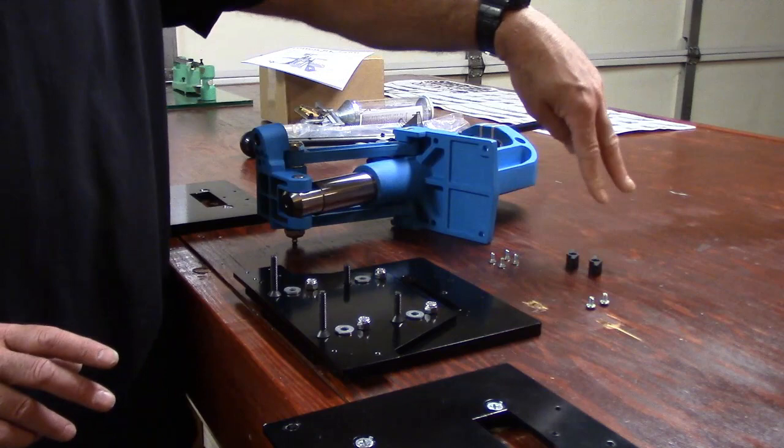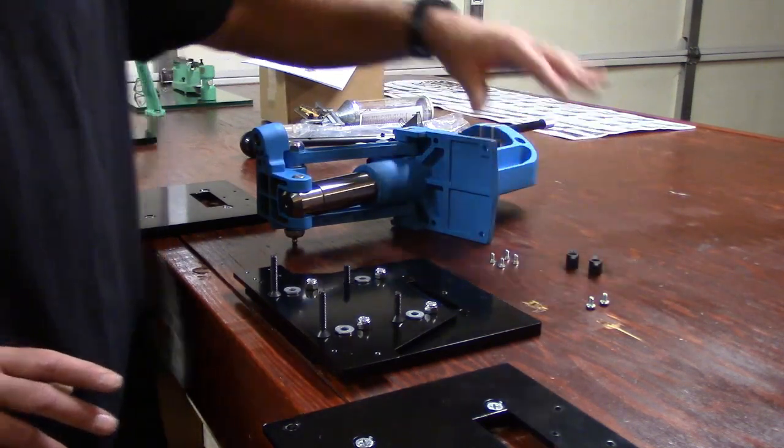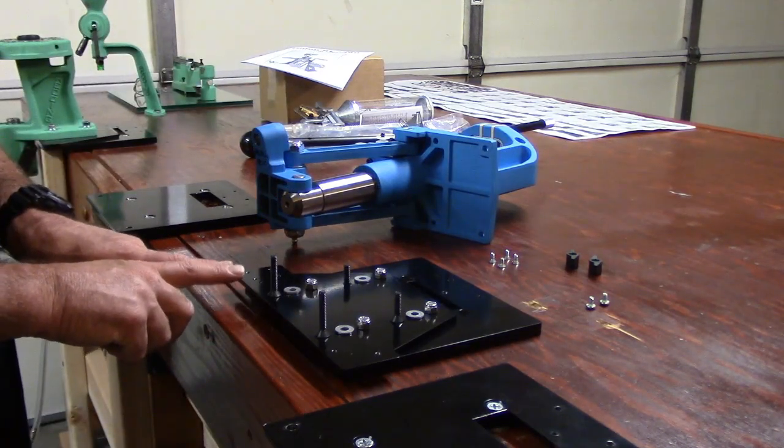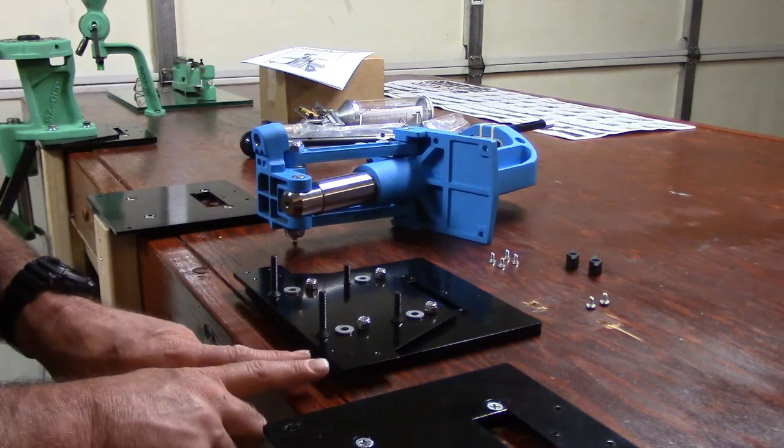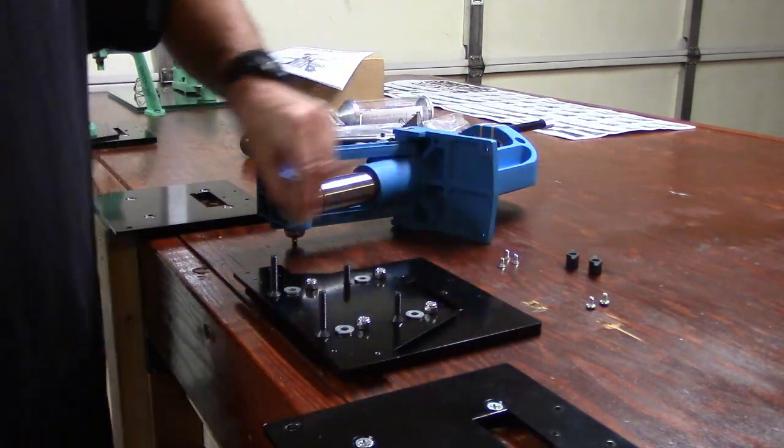And as you guys can see, Dan provides everything you need to get this quick change top plate mounted on this press. It's easy. Now Dan also provides you with four nylon nuts. And now what we have left is we have these four screws and those two screws, and we have these knobs.